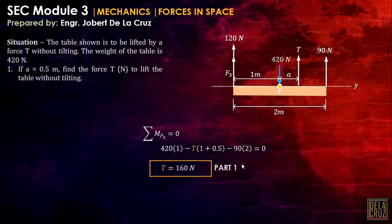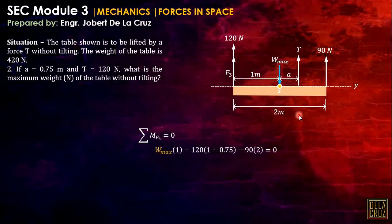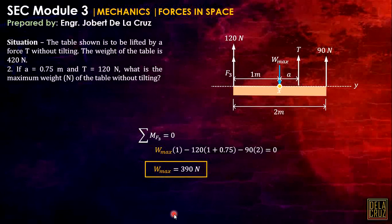Problem number 2: if A is 0.75 and T is 120 Newtons, find the maximum weight of the table without tilting. Here the unknown is W max. Using the same plane and same equation — just with the unknowns swapped — we now have T given and solve for W max.